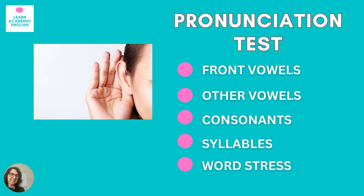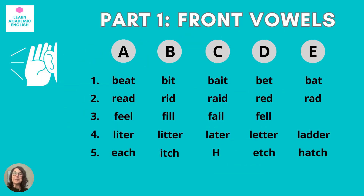So let's take that test. This test is going to have five parts and then we will go through the answers: first we'll do front vowels, then other vowels, then consonants, syllables, and finally word stress. You're going to need a piece of paper and a pen or pencil to write down your answers. In the first part, I'm going to say one of the words and you're going to write down the word that you hear. If you want to save time, you can also just write the letter — for example, A, B, C, D, E — but I would recommend that you write down the word as well.